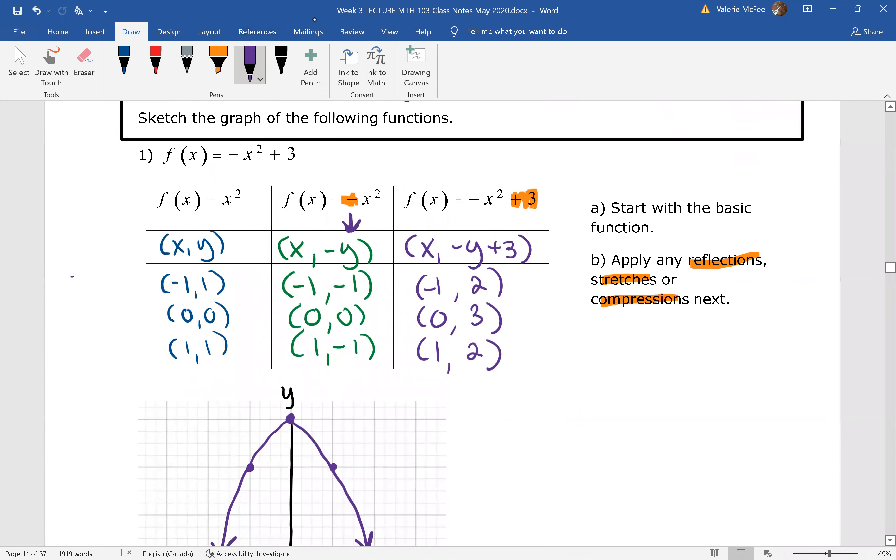Let's go back and look here. We see we have this negative outside the function. We know that that's a reflection across the x axis. And then we have this plus 3, which tells us that we're going to have a vertical shift up 3 units.